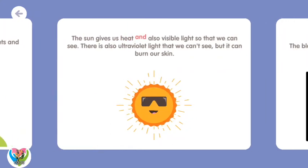The Sun gives us heat and also visible light so that we can see. There is also ultraviolet light that we can't see, but it can burn our skin.